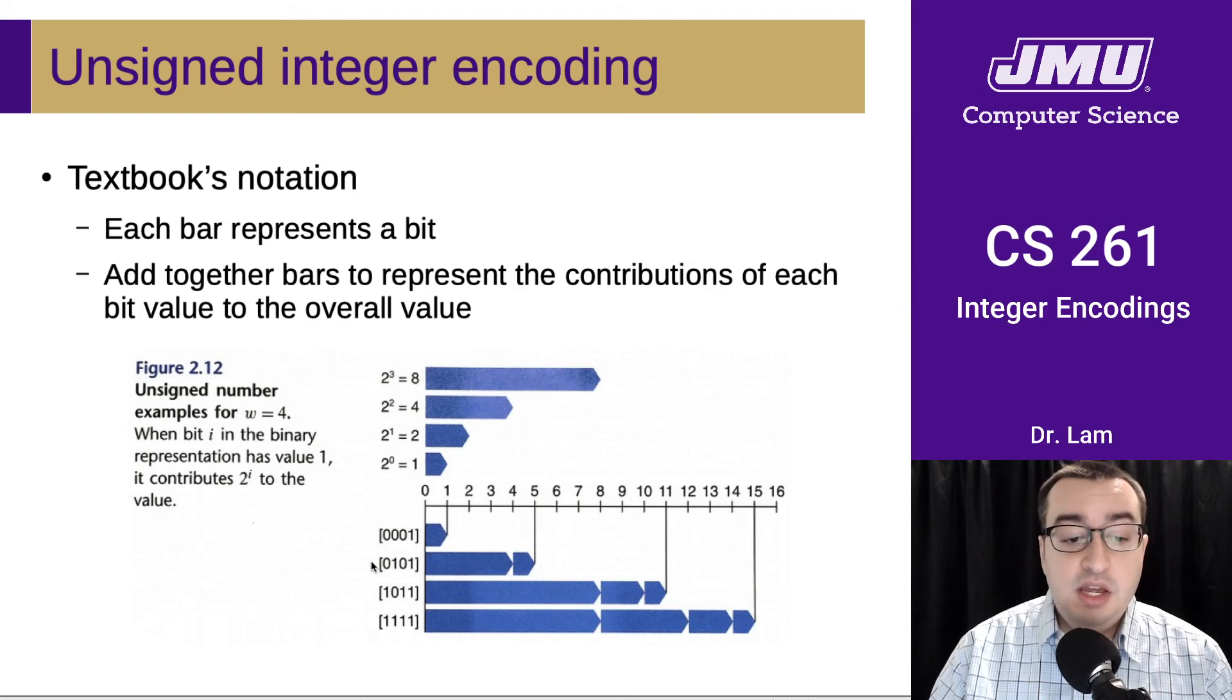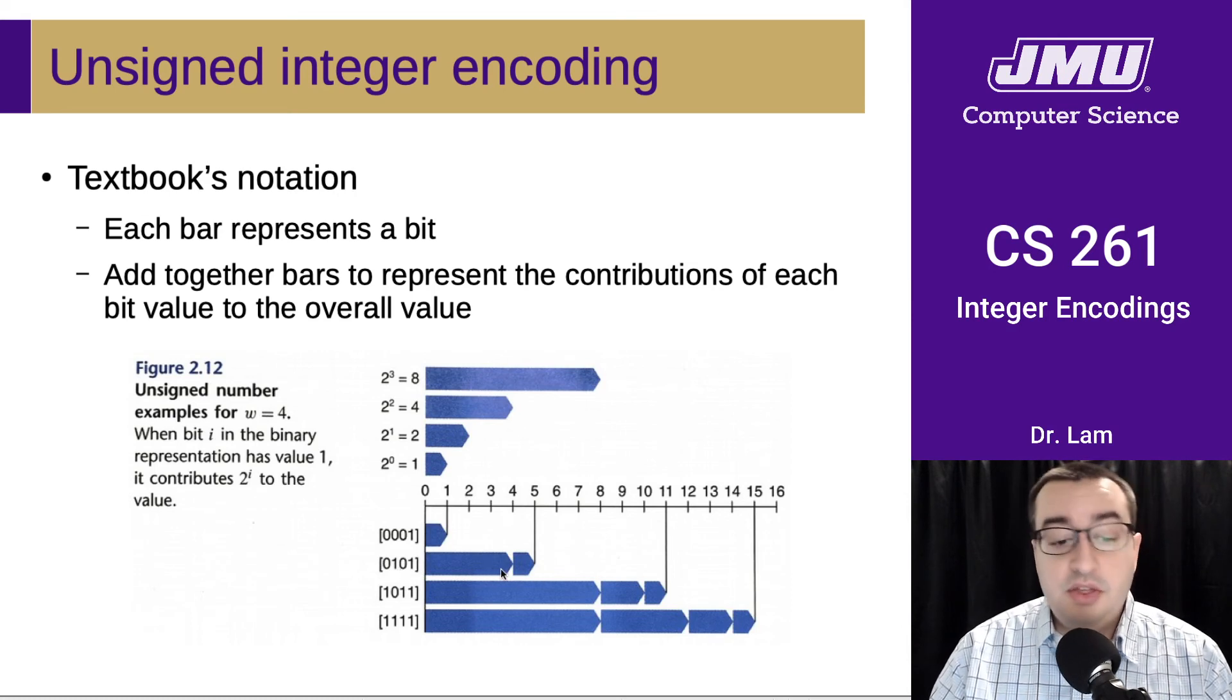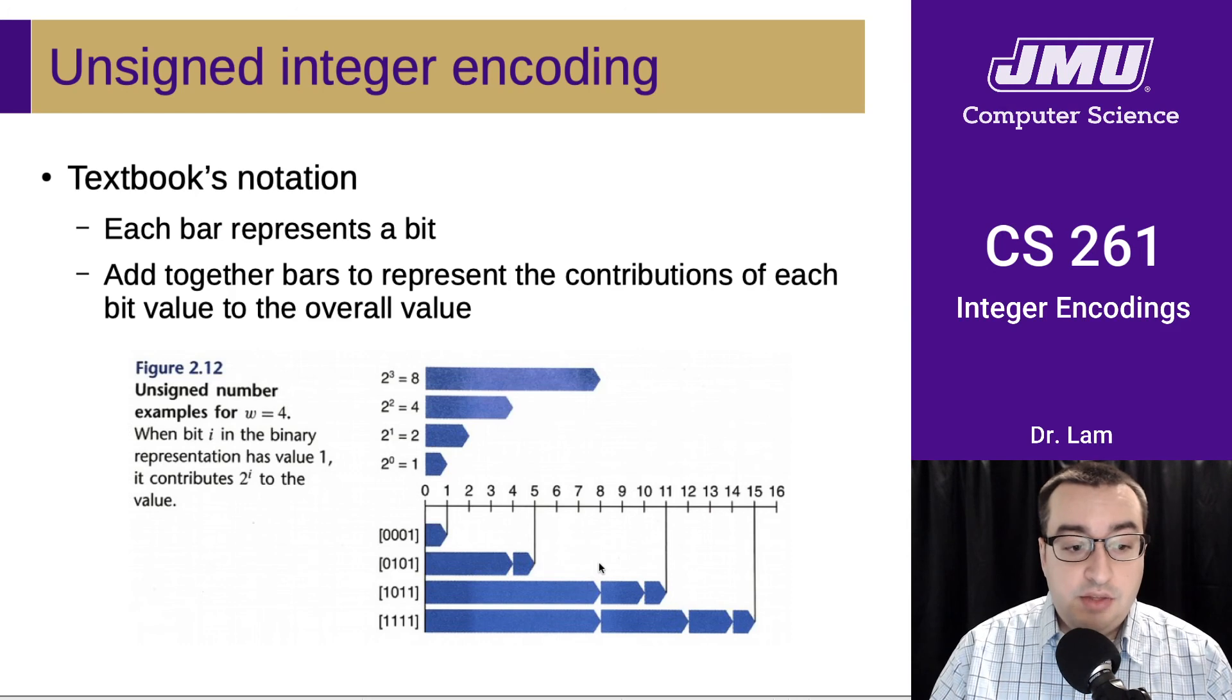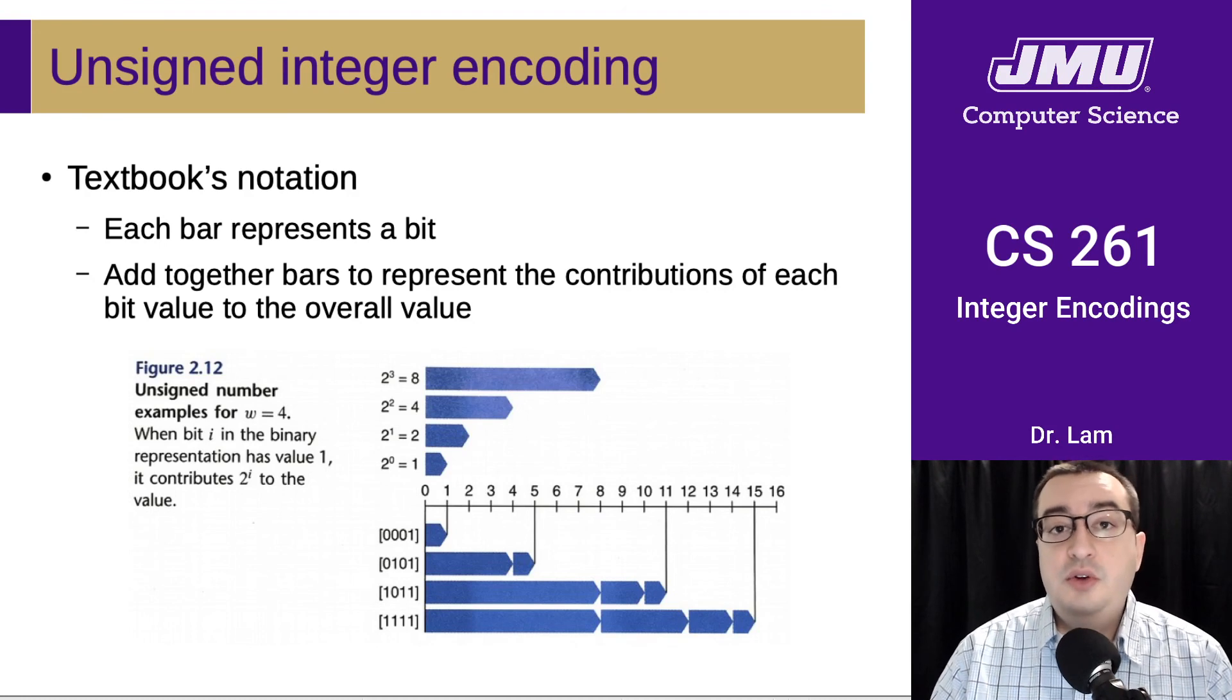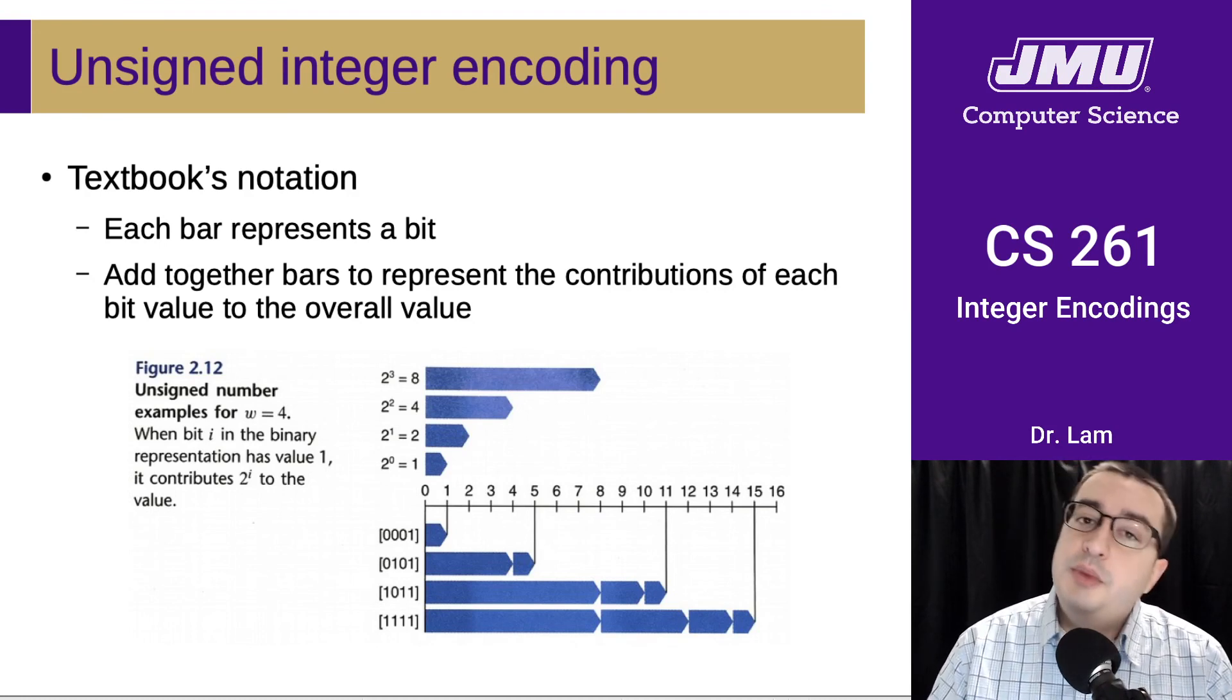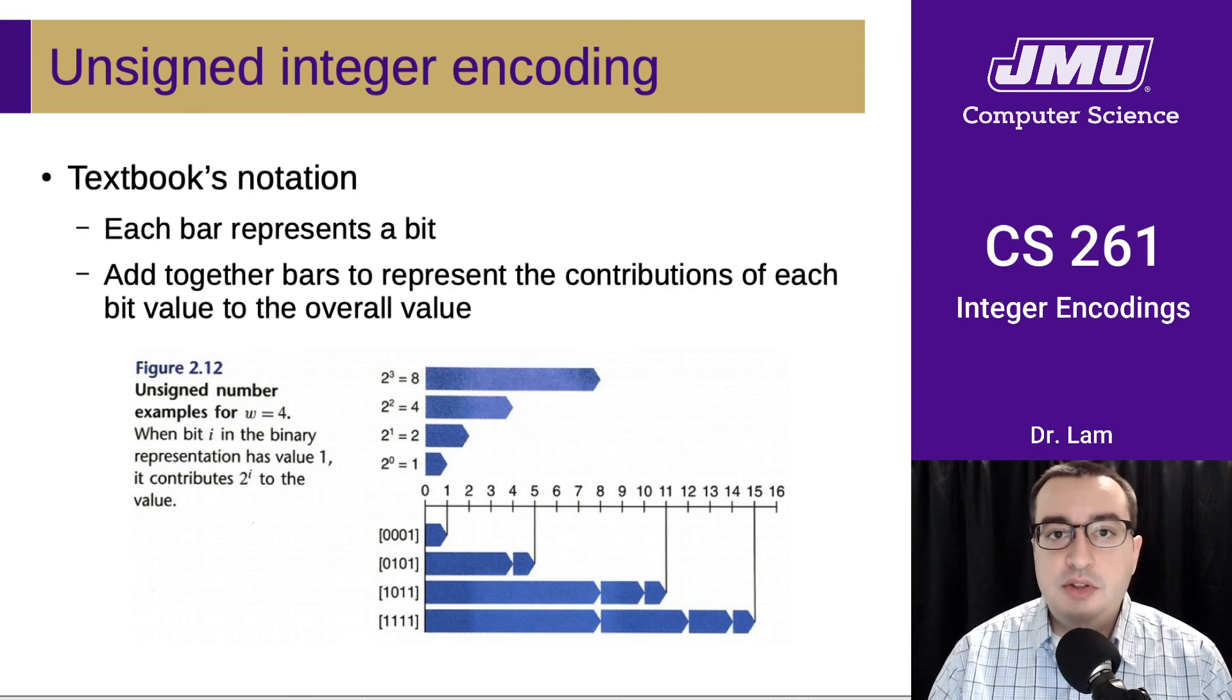So for instance, the number 5 is 101 in binary, so you have the 4 bar and then you have the 1 bar. You add those together and you get 5. And then same for these other examples here. So this is just a little way of visualizing the value that's being stored in a particular number, and it may or may not be useful to you, but I wanted to just mention it for something for you to notice as you're going through the reading.